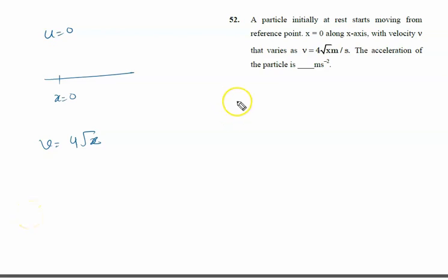First of all, when it comes to finding acceleration, one formula is dv/dt, which is used when velocity is a function of time. The other formula is a = v dv/dx, which is used when velocity is a function of position. In this situation, velocity and x are related, so we will use this formula.